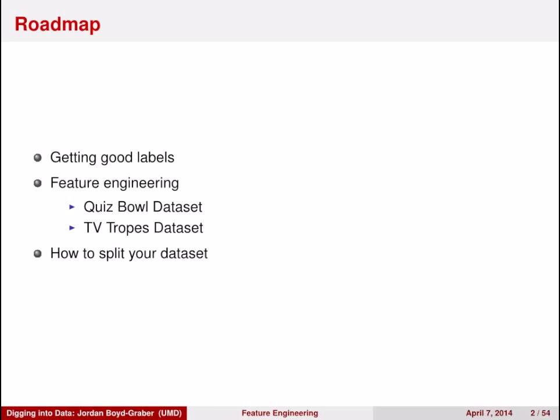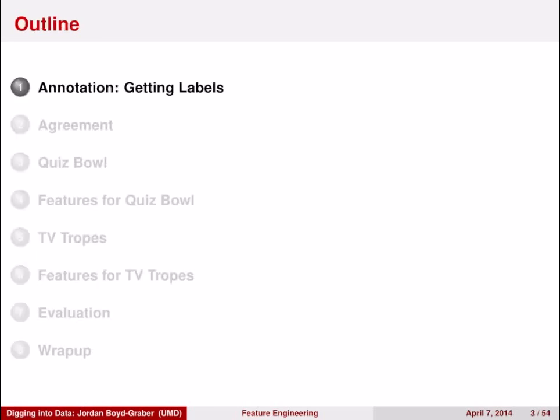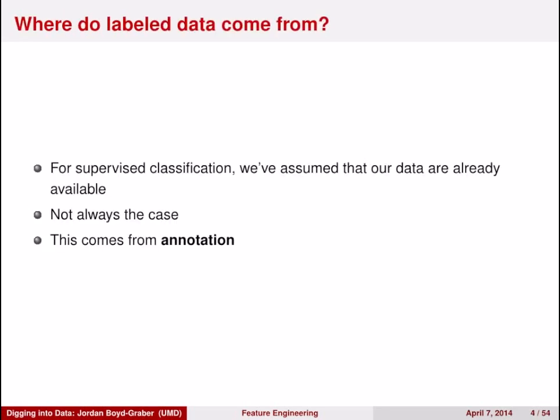We'll talk about how to evaluate your data set to show that you've done a good job. So first, let's start with the annotation process. Thus far we've assumed that all of our data have labels already. This is not always the case.